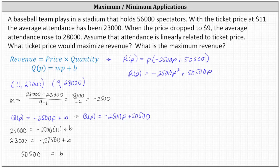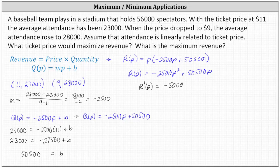To determine the maximum revenue, we'll determine the critical numbers, which is where the first derivative is equal to zero or undefined. We need to determine R prime of P. R prime of P is equal to the derivative of negative 2,500P squared plus 50,500P, which is negative 5,000P plus 50,500. The derivative is never undefined, and therefore we determine the critical numbers by setting the derivative equal to zero.